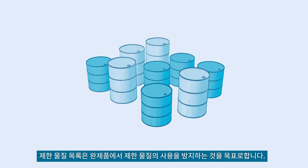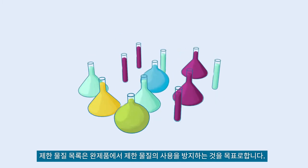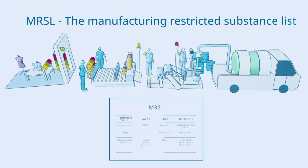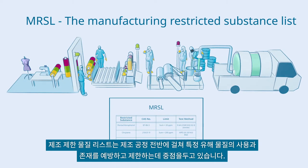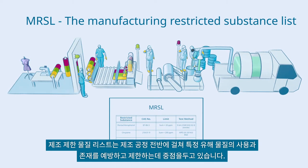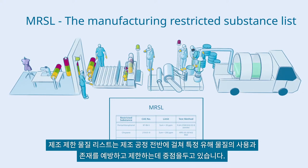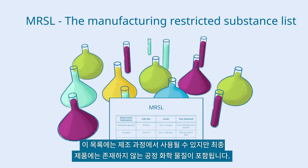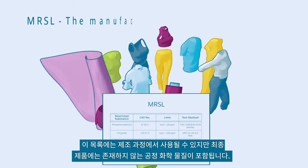The Restricted Substance List aims to prevent and limit the use of restricted substances in finished products. The Manufacturing Restricted Substance List focuses on preventing and restricting the usage and presence of specific hazardous substances throughout the entire manufacturing process. This list includes process chemicals which may be used in manufacturing but are not present in the end product.